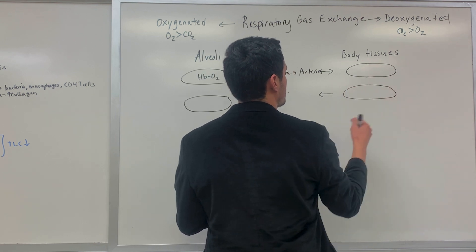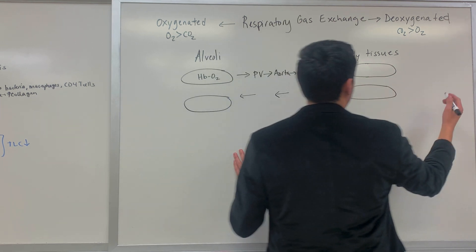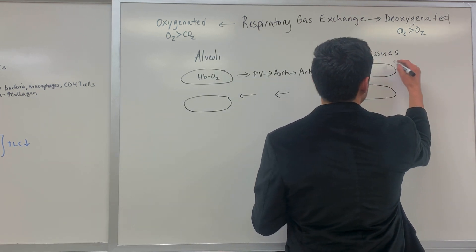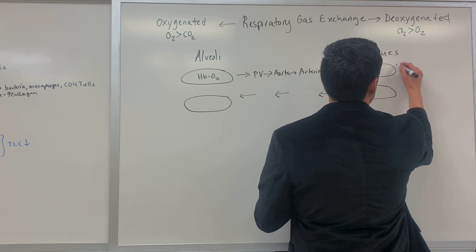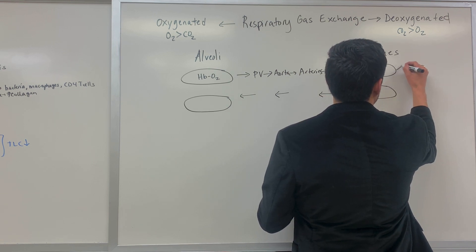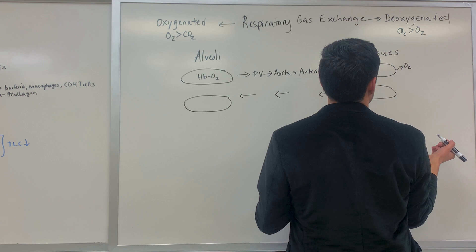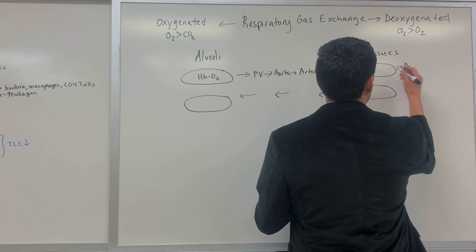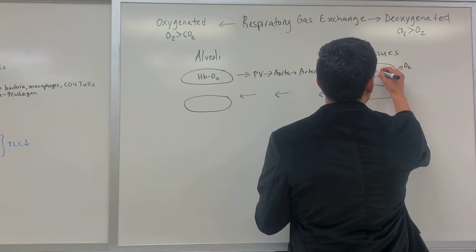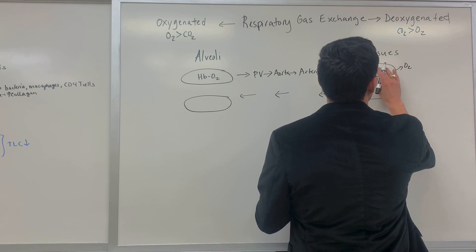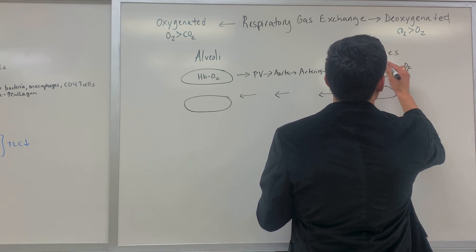Once we get to the body tissues, the hemoglobin will kick off the oxygen, and it diffuses into the body tissues. Once it drops off the oxygen, the hemoglobin can also bind to a hydrogen ion.